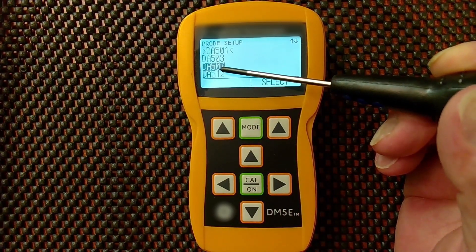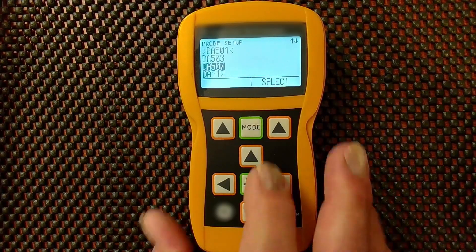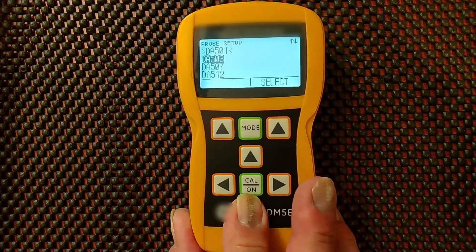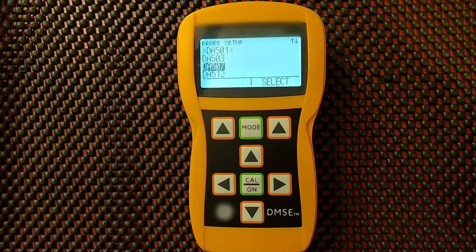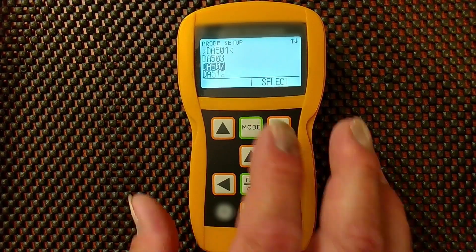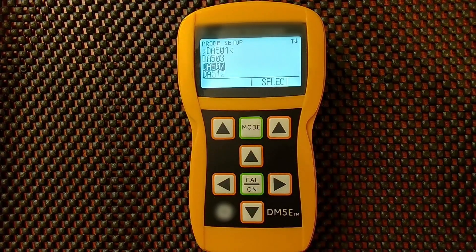While the probe with the cursor is just temporarily indicated. So that's how the probe selection menu works. Thank you for joining me, and thank you for choosing the DM5E.